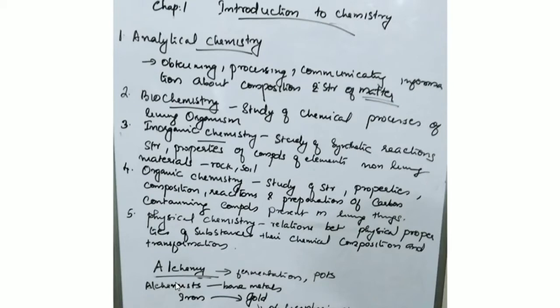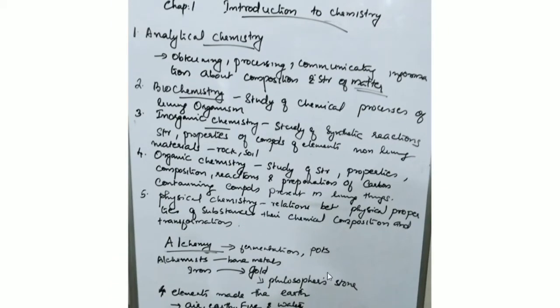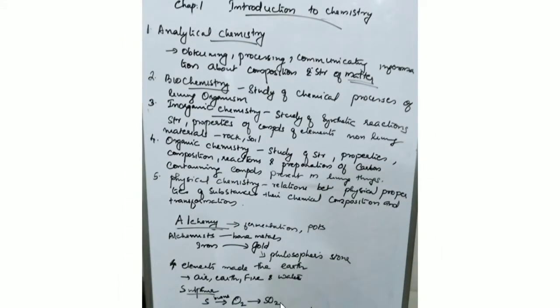Alchemy is the word from which the term chemistry originates. Alchemy involves fermentation processes. Alchemists were scientists studying chemical reactions in the first century. They used iron-made equipment and attempted to transfer base metals into gold through various chemical processes using what is called the philosopher's stone. The four elements believed to make the earth are air, earth, fire, and water.